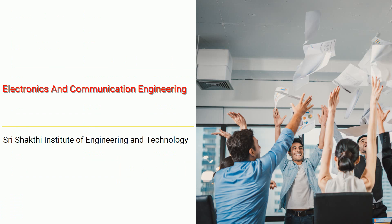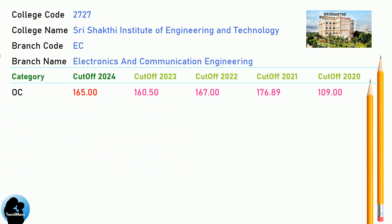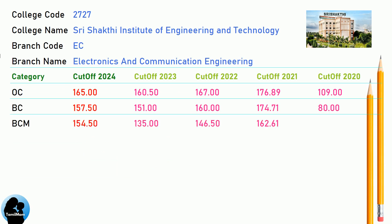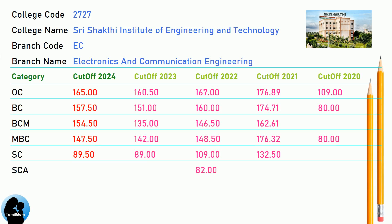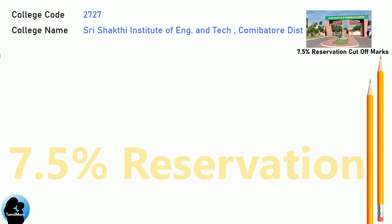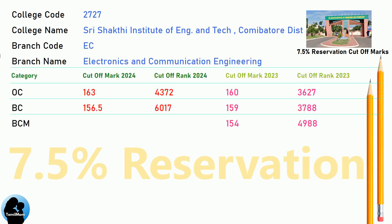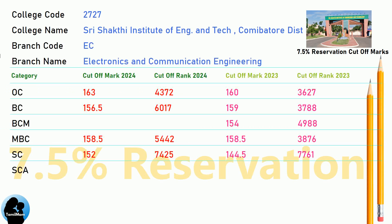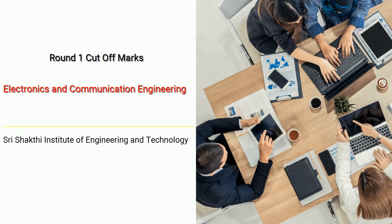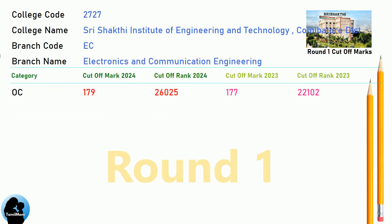DNA Cut-Off for Shri Shakti Institute of Engineering and Technology in Electronics and Communication Engineering. DNA 7.5 Reservation Cut-Off for Shri Shakti Institute of Engineering and Technology in Electronics and Communication Engineering. DNA Round 1 Cut-Off for Shri Shakti Institute of Engineering and Technology in Electronics and Communication Engineering.